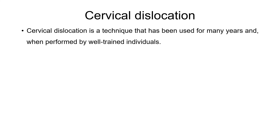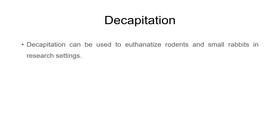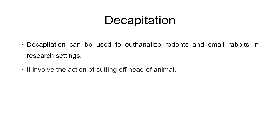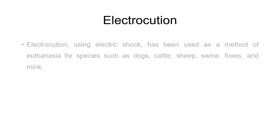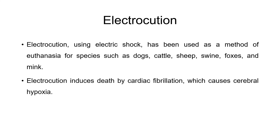Cervical dislocation is a technique used for many years that, when performed by well-trained individuals, may induce rapid loss of consciousness. Decapitation can be used to euthanize rodents and small rabbits in a research setting and involves cutting off the head. Electrocution using electric shock has been used for species such as dogs, cattle, sheep, swine, fox, and mink, and induces death by cardiac fibrillation causing cerebral hypoxia.